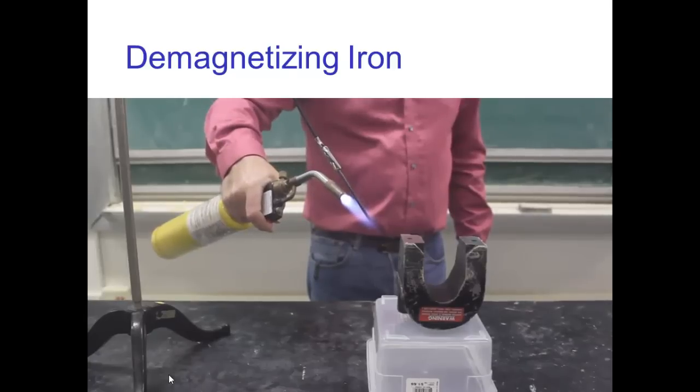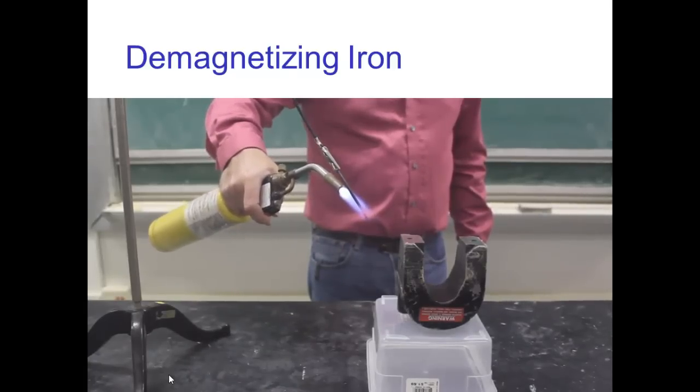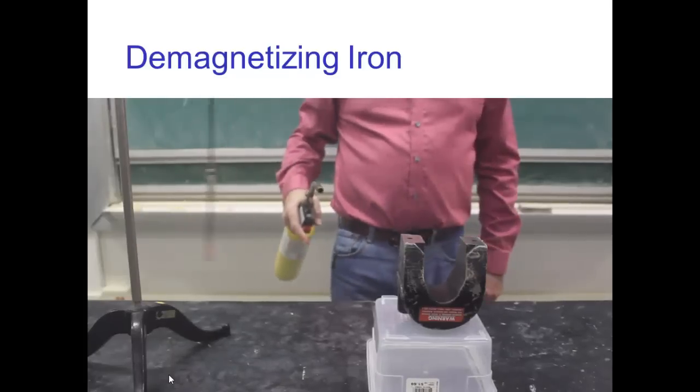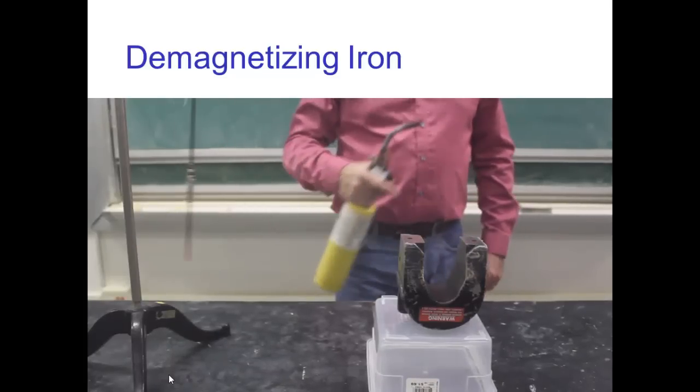So the nail is gonna get red hot and if I get it hot enough, see, once I get it hot enough, I have scrambled those magnetic domains inside the nail and it can't retain alignment and so it's no longer attracted to the horseshoe magnet.